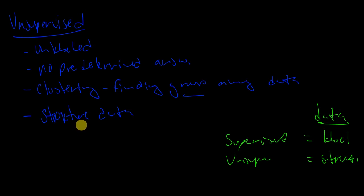With supervised you have regression and classification. Unsupervised is messier because we don't have the labeled data — it's way more computer-intensive. It is useful, but it's not as useful as supervised learning. However, it absolutely does have its place, and when we get to reinforcement learning you will see that absolutely.